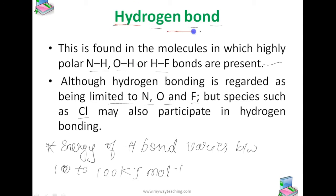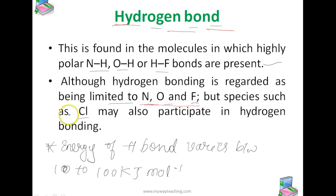You should know what is meant by hydrogen bond. Any molecule combined with hydrogen through a highly electronegative element can form hydrogen bonds. Hydrogen bonding is limited to N, O, and F, but sometimes chlorine also participates. The energy of the hydrogen bond is 10 to 100 kilojoules per mole.